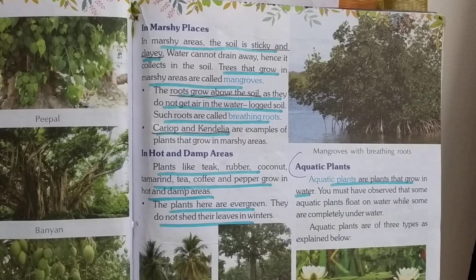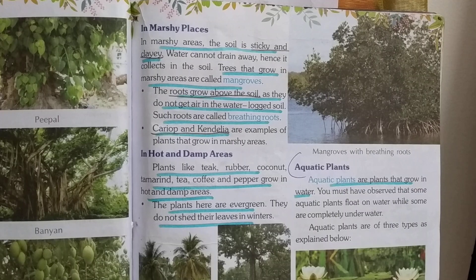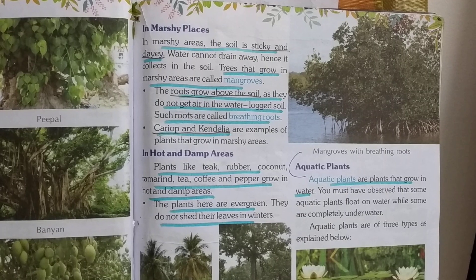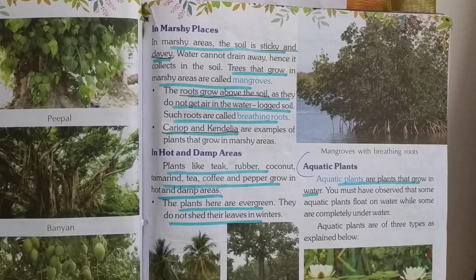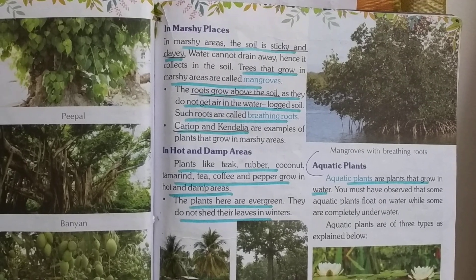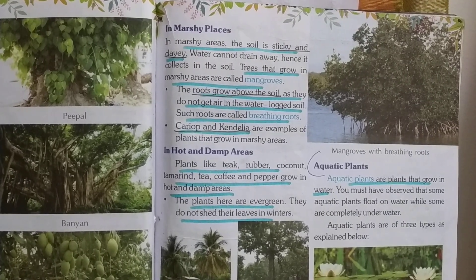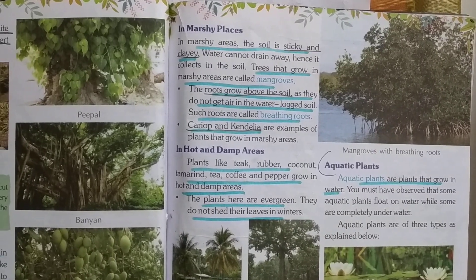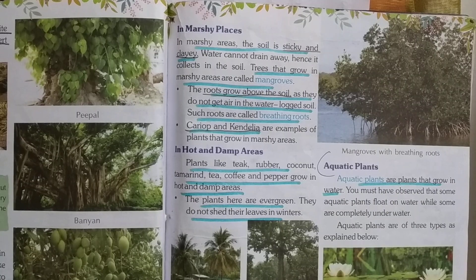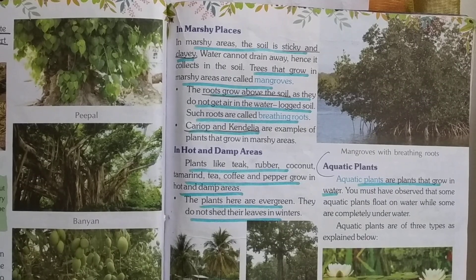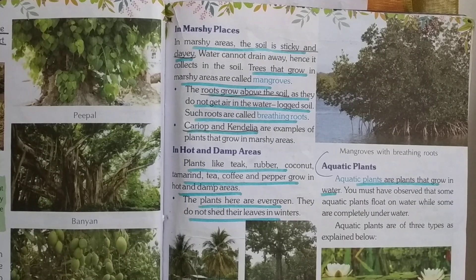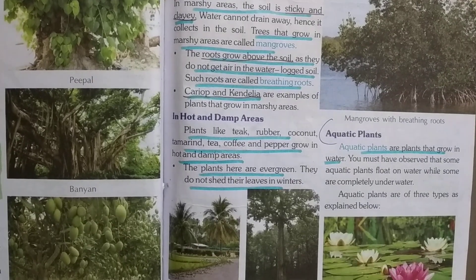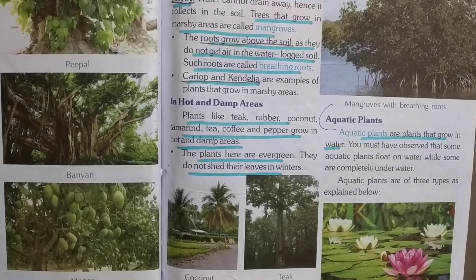In marshy areas, the soil is sticky and clay — water cannot drain away, so it collects in the soil. Trees that grow in marshy areas are called mangroves. The roots grow above the soil as they do not get air in the waterlogged soil. Such roots are called breathing roots.